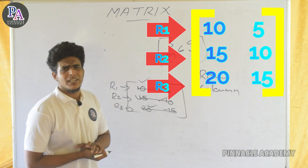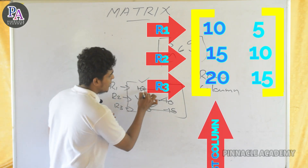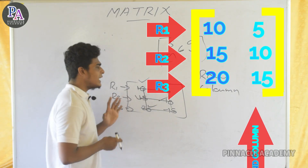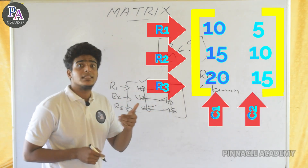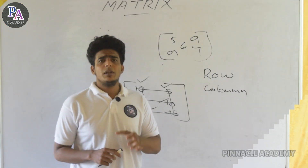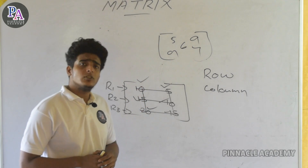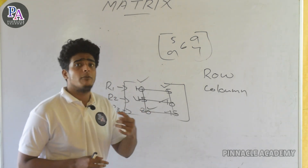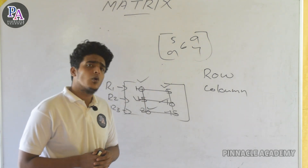Column is the vertical line. The numbers represent the number of columns. We call out the rows and columns of the matrix. A column is equal to a vertical line. Simply, in a row we call it a row, and the number of rows of a matrix means the count of horizontal lines.